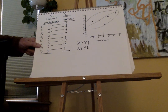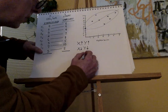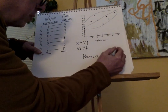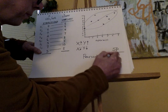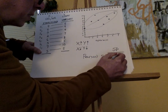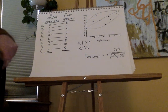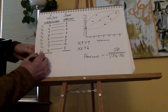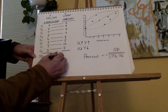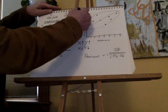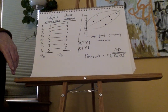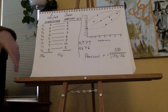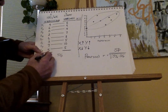We are going to compute Pearson's R, which is the sum of products over the square root of the sum of squares for x times the sum of squares for y. Let's do the sum of squares for x, the sum of squares for y, and eventually we'll need an x times y column.